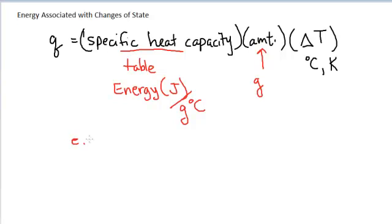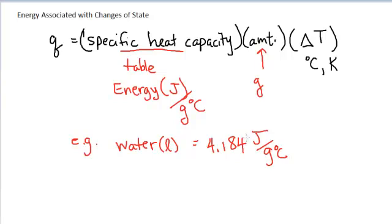For example, the specific heat capacity of liquid water is 4.184 joules per gram per degree Celsius. So it takes 4.184 joules of energy to heat 1 gram of water up by 1 degree Celsius. Likewise, 1 gram of water will cool down 1 degree Celsius by giving off 4.184 joules of energy.